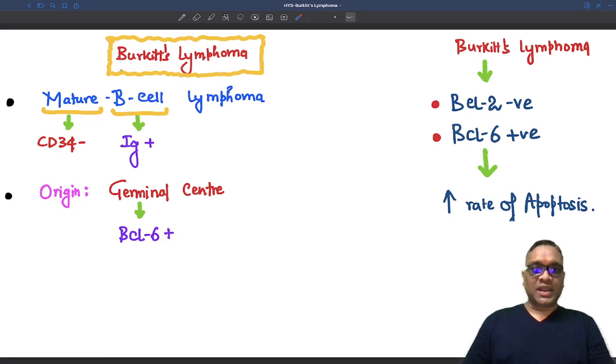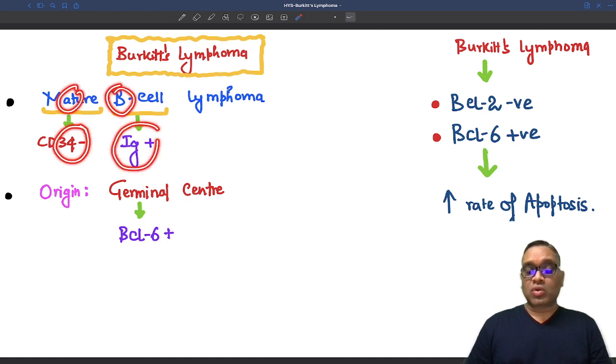Hello everyone, in this Hilding Shorts, I am going to tell you about Burkitt's lymphoma, which is a mature B-cell type of lymphoma. When you see mature, it will be CD34 negative and B-cell, so it will be immunoglobulin positive.